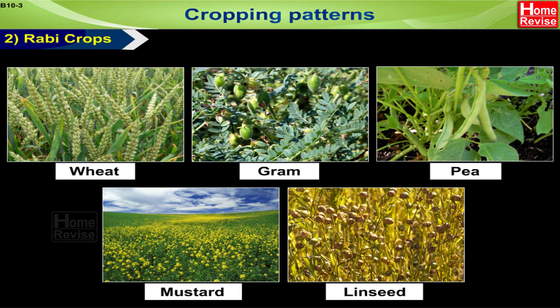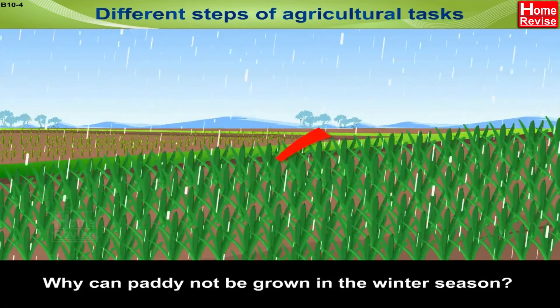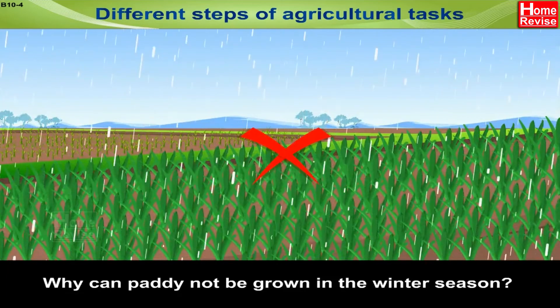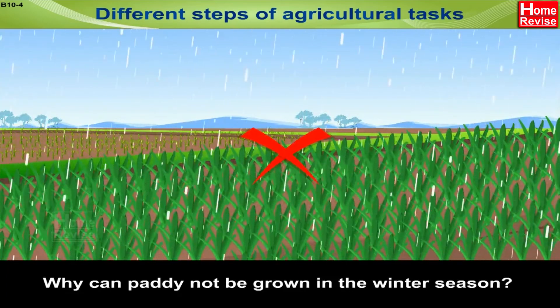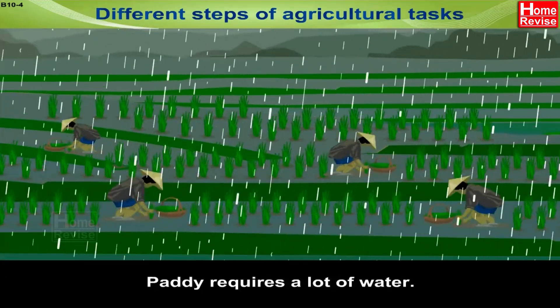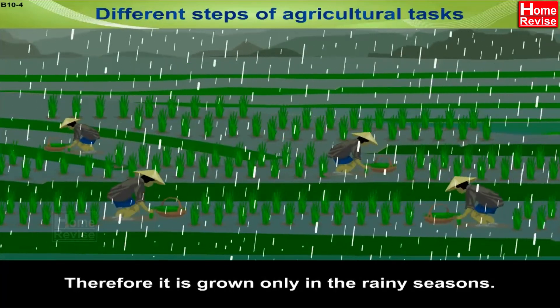Besides Kharif and Rabi crops, pulses and vegetables are also grown during summer at many places. Why can paddy not be grown in the winter season? Because paddy requires a lot of water, it is grown only in the rainy season.